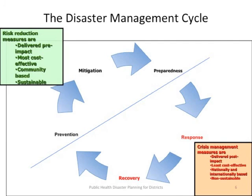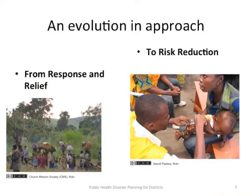Completing the disaster management cycle — the cycle includes preparedness, response, recovery, and mitigation. There is an evolution in approach from response and relief to risk reduction.